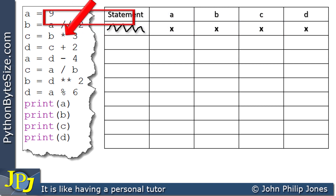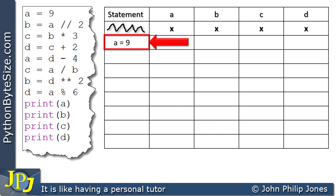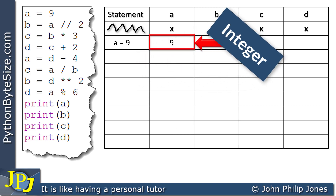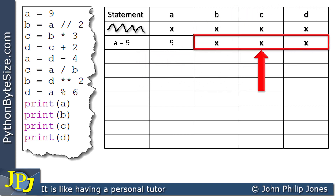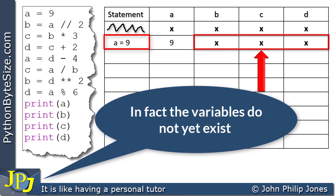Then we consider the computer program. We go to the first program statement and copy it into the statement column: A is assigned 9. I now need to consider what variables have been affected — clearly it's the A column, which has changed from the don't care condition to the value of 9, so variable A is now storing the integer 9. A is assigned 9 has done nothing to B, C, and D, so we simply copy the row above down — three Xs, because B, C, and D are still in the don't care condition.